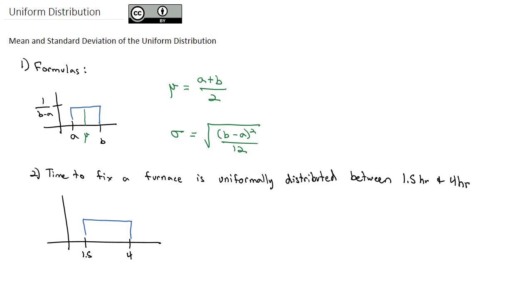We know that width has a distance of 4 minus 1.5, which is 2.5. So the height is 1 over 2.5 or 0.4.